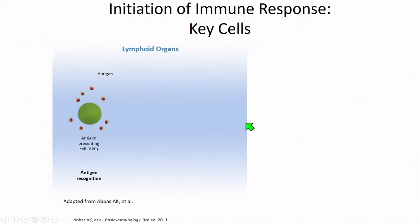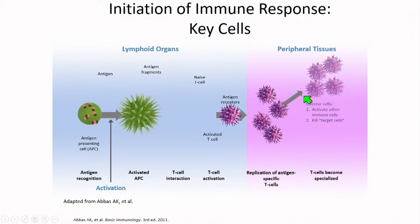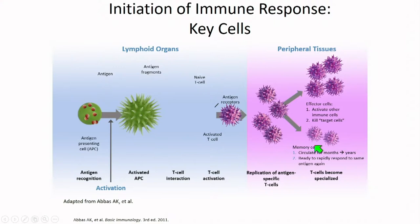For Sipuleucel-T, the antigen used to stimulate activation is prostatic acid phosphatase. This happens in the lymphoid organs. Activated T cells become effector cells that result in cell death. These effector cells are targeted and antigen-specific, with upregulation of the immune response.